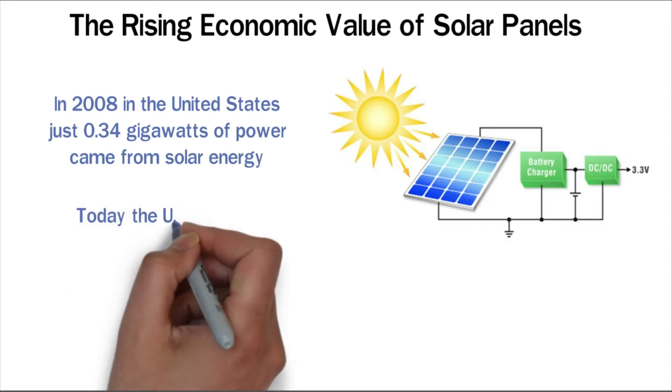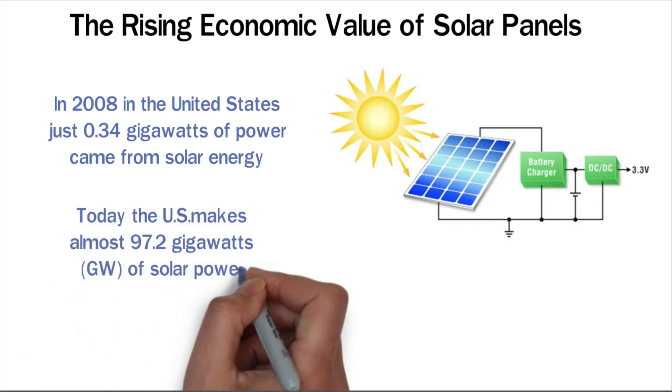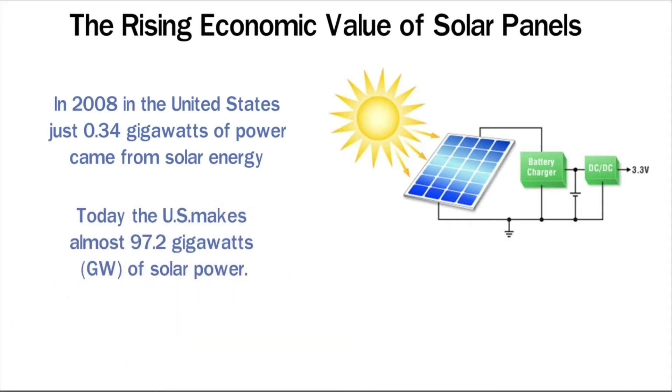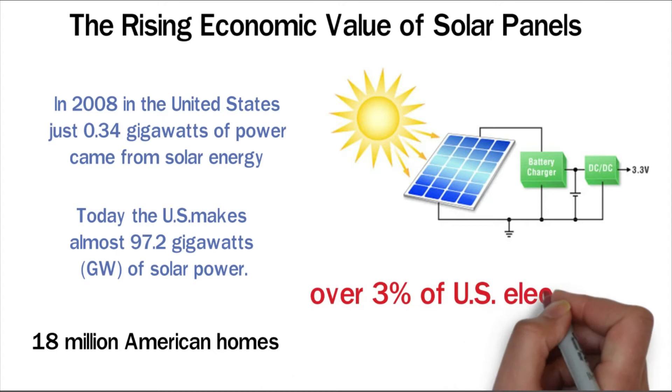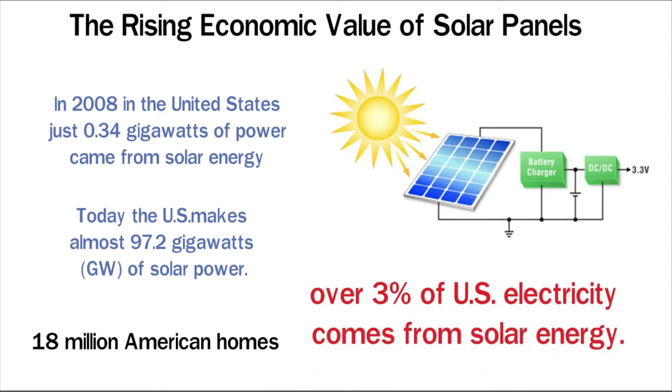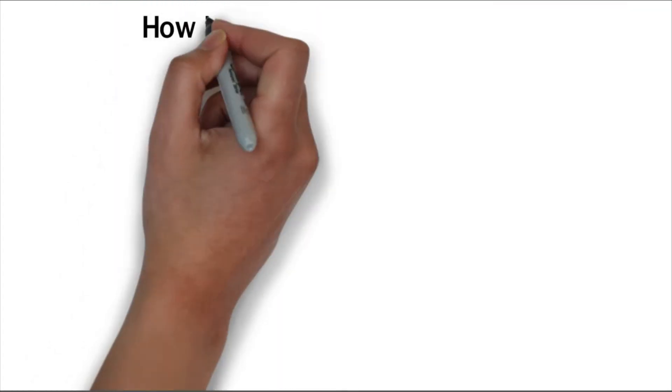Today the U.S. makes almost 97.2 gigawatts of solar power. This is enough to power about 18 million American homes. Today over 3% of U.S. electricity comes from solar energy.